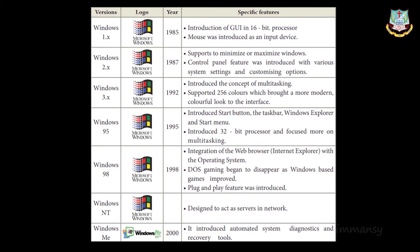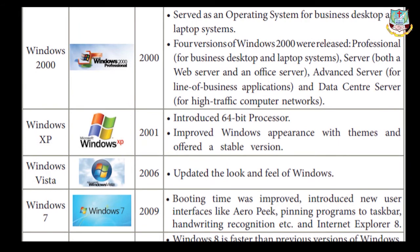Windows 2000 also came in the year 2000 and served as an operating system for business desktops and laptop systems. Four versions were released: Professional — for business desktops and laptops; Server — with web server and office server capability; Advanced Server — for line-of-business applications; and Data Center Server — for high network traffic scenarios.